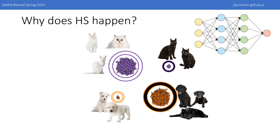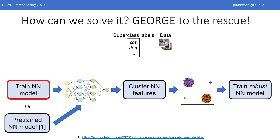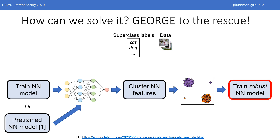These observations inspire our algorithm for mitigating hidden stratification, which we call George. The inputs are just the data and the superclass labels. First, we either train a standard neural network model on the task or use an off-the-shelf pre-trained model, and look at the feature representation of this neural network — in other words, the activations before the last layer. After transforming the data to this feature space, we apply unsupervised clustering to the data from each superclass. Since we don't have the true subclass labels, we treat the clusters as our subclasses. Once we've identified these clusters, we train a new model to perform well on the worst-off cluster using robust optimization — specifically, we train the model to minimize the maximum loss over any cluster. If the clusters are good approximations of the subclasses and the model performs well on every cluster, then the model will perform well on every subclass as well.